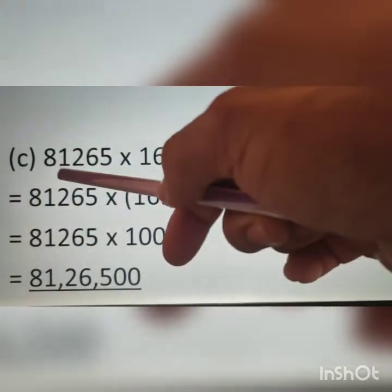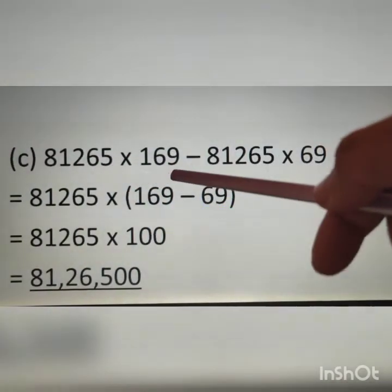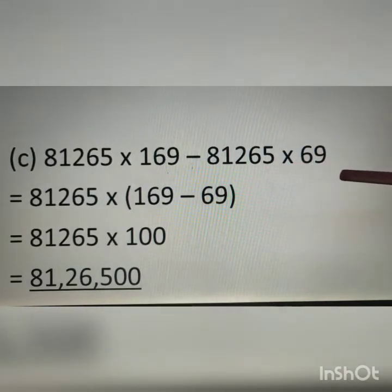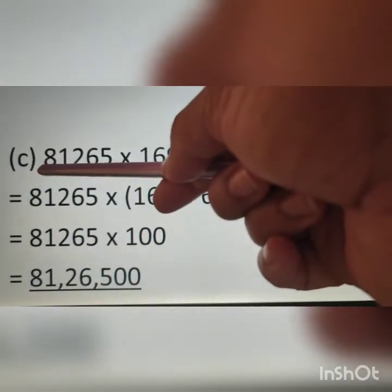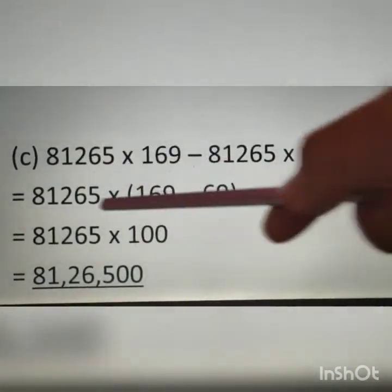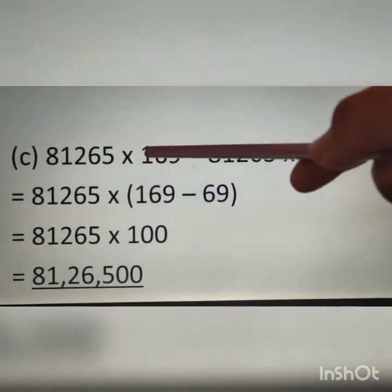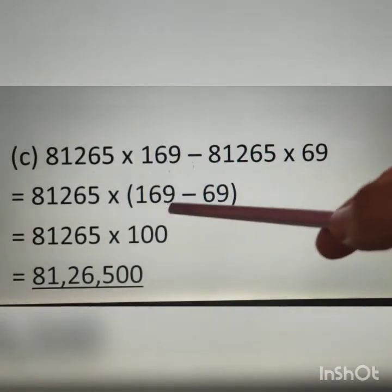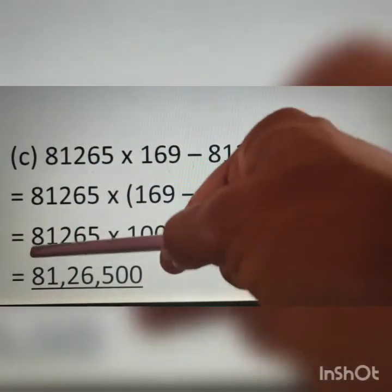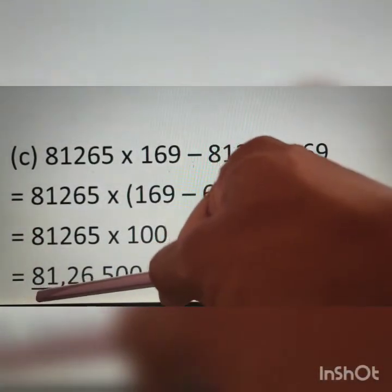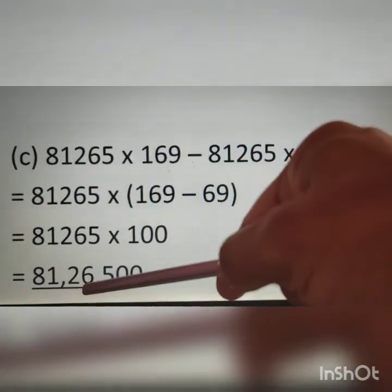Question C: 81,265 multiplied by 169 minus 81,265 multiplied by 69. By the distributive property, we take 81,265 outside because it is common in both terms. The remaining expression is 169 minus 69, which equals 100. Therefore, 81,265 multiplied by 100 gives the answer 81,26,500.